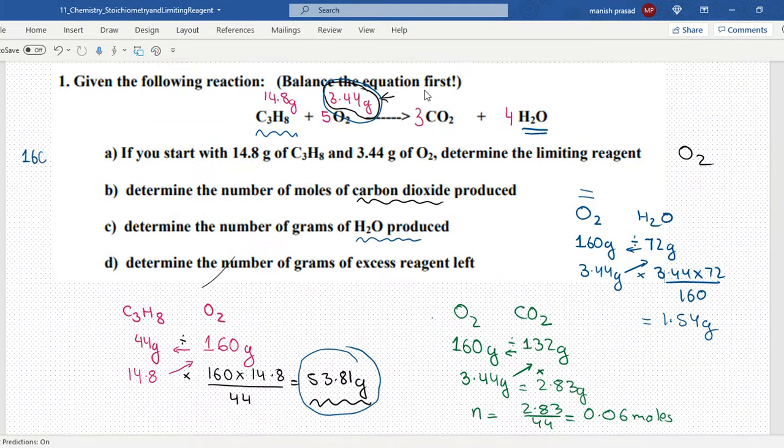So it is 160 requiring 44, and then we got 3.44 requiring 0.94. This is the amount of propane used, and propane given to us is 14.8 grams. So how much is in excess? What are we going to do? Subtract it. So 13.86 grams of propane is in excess.